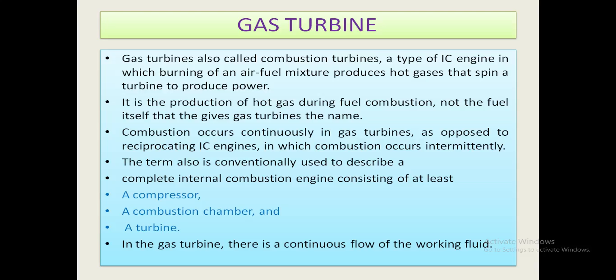Combustion occurs continuously in gas turbines, as opposed to reciprocating internal combustion engines in which combustion occurs intermittently. The term is also conventionally used to describe a complete internal combustion engine consisting of at least a compressor, a combustion chamber, and a turbine. In the gas turbine there is a continuous flow of the working fluid.